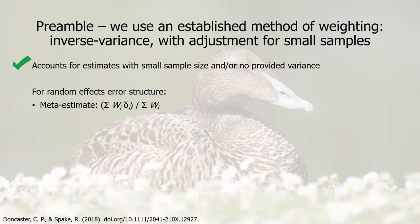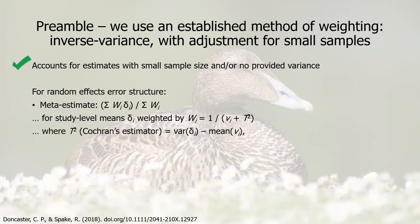For the random effects error structure, which is what we're using, you calculate your meta-estimate as the sum of the products of weightings and estimates divided by the sum of the weightings, for study-level means weighted by one over v_i plus τ², where τ² is Cochran's estimator of between-study variance, and the study-level error variances v_i are calculated by the mean variance across all the studies divided by each sample size.